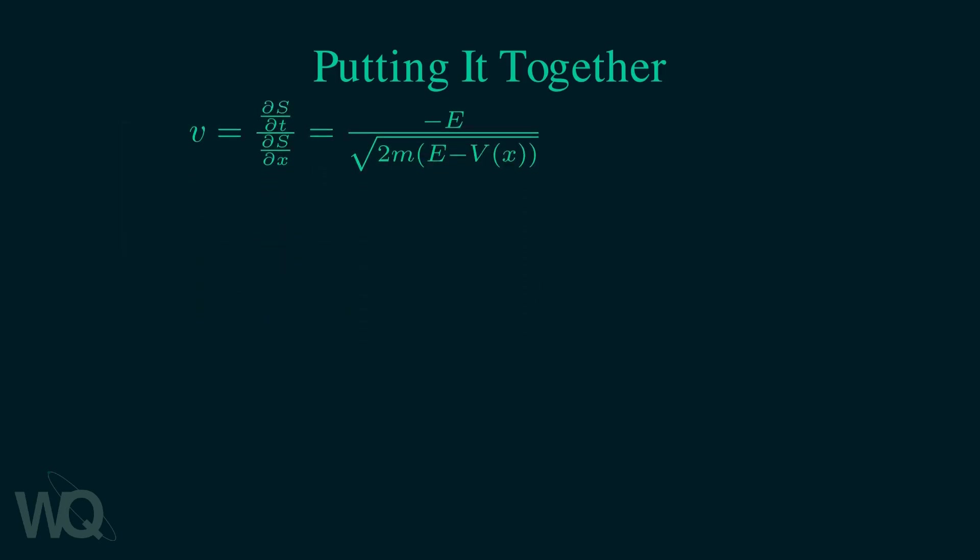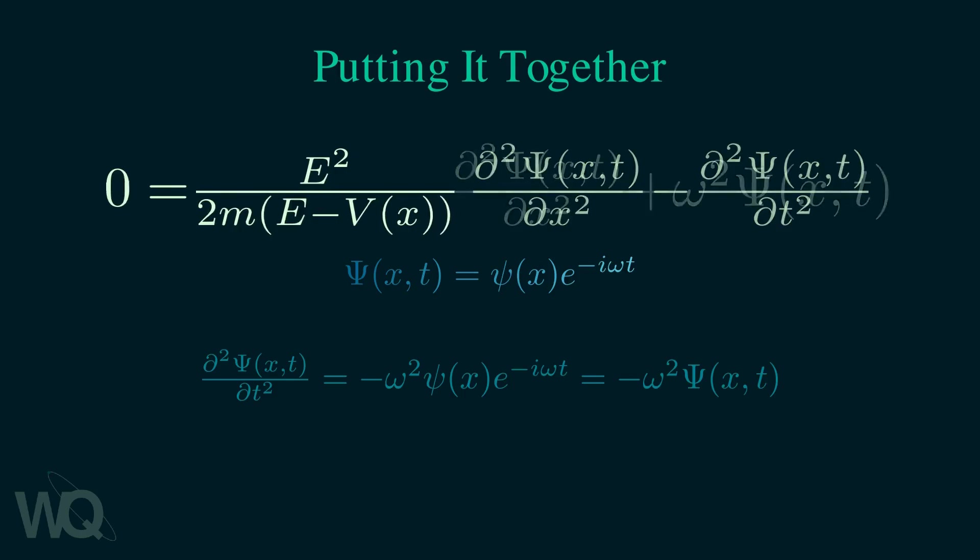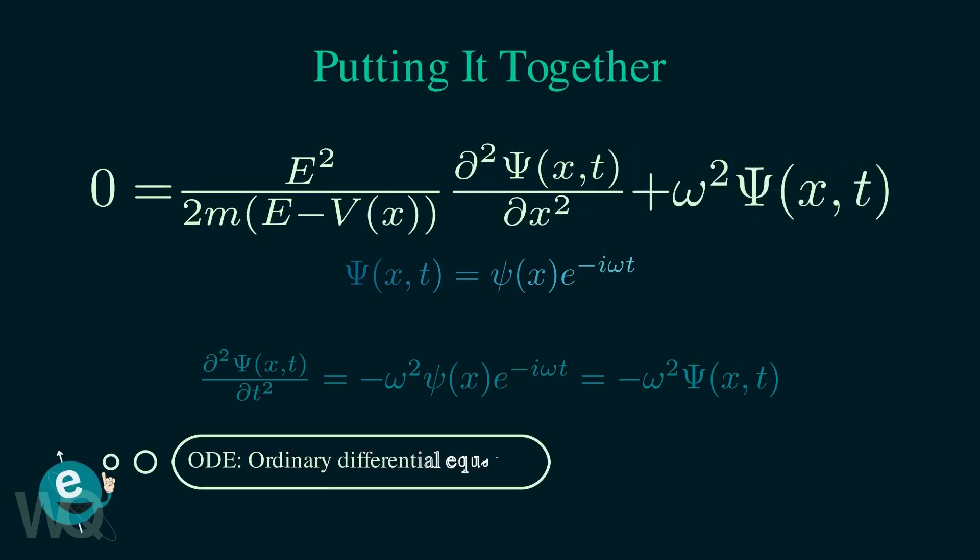Now we are very close to the Schrödinger equation. Let's insert this expression for v into the wave equation. Now the standard trick to solve the wave equation is to assume that the solution has this form. In which case, the second derivative with respect to time can be written in terms of the wave function itself. Just like before, inserting this reduces the wave function to an ODE. Here, omega is the angular frequency of the exponential term.